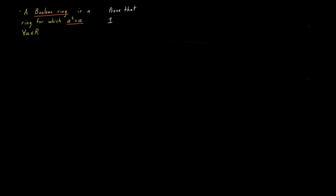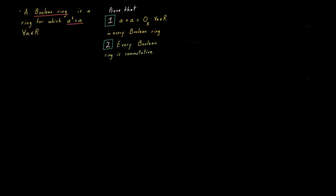This time our problem concerns Boolean rings. What's a Boolean ring? Well, simply any ring for which any element you pick and square, it equals itself. With that definition on the table, we want to prove two things. Number one, A plus A will always be the additive identity element of our ring, and number two, it turns out every Boolean ring is commutative.